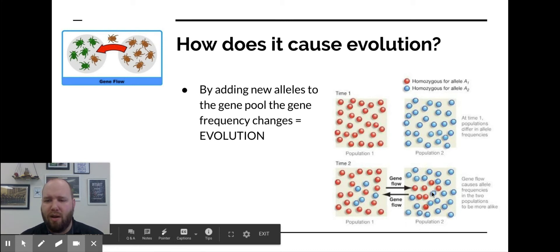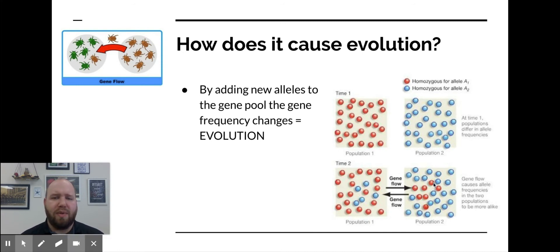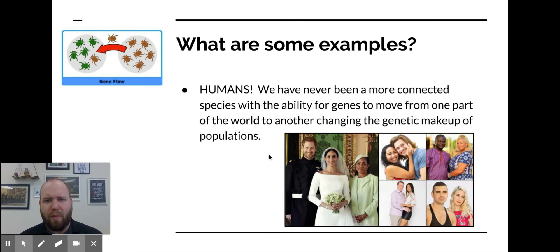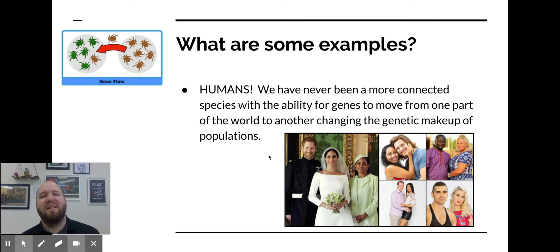As long as these changes carry on to the next generation, we've seen a change in the allele frequency — a change in the gene pool — and so evolution has occurred. The best example is us humans. We see the most gene flow of any species on Earth because we travel all around it.